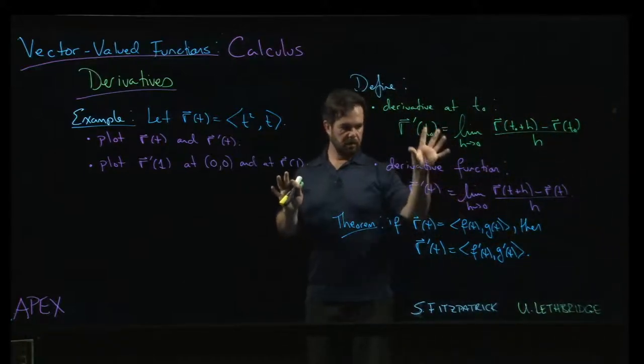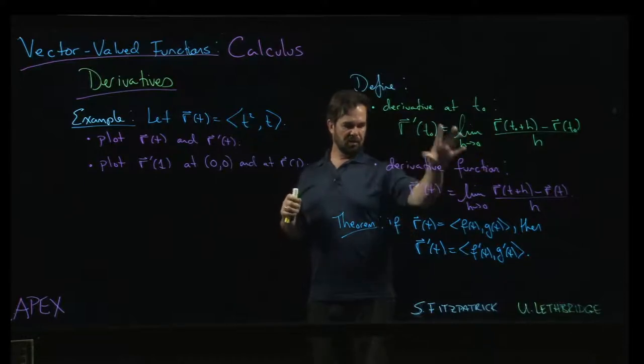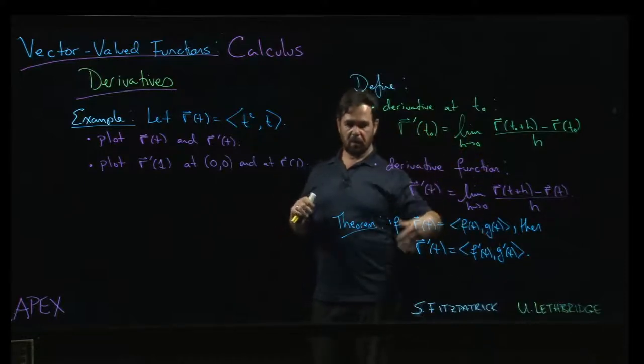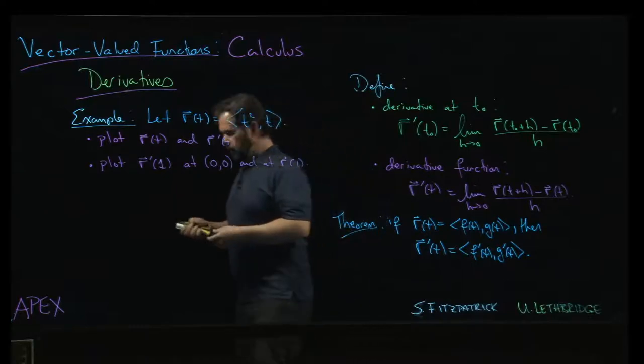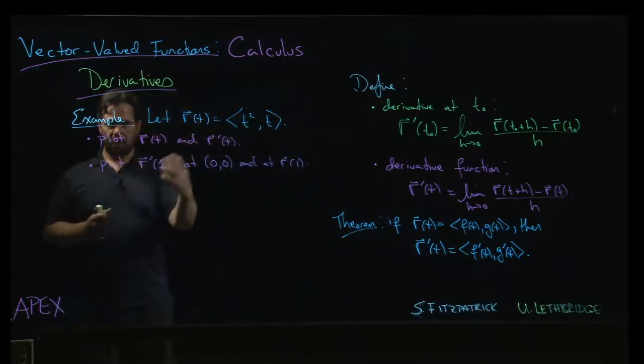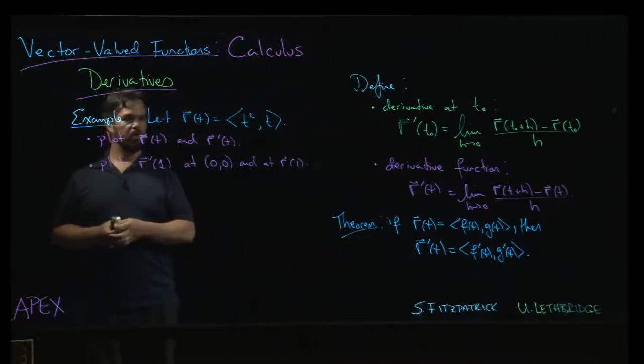So we've defined the derivative both in terms of limits and then we've given this theorem saying we just take the derivative term by term. Now we're going to use that for an example, so we're going to do some plotting.